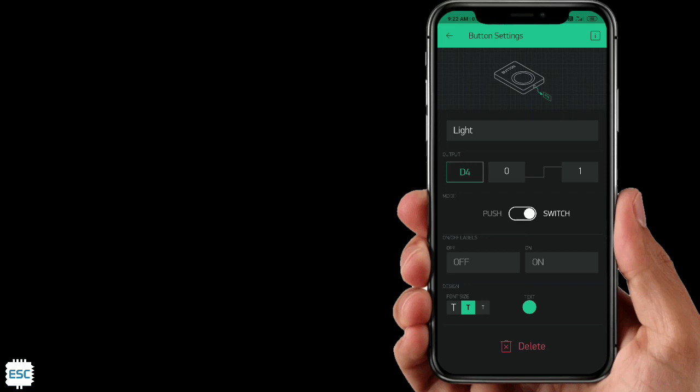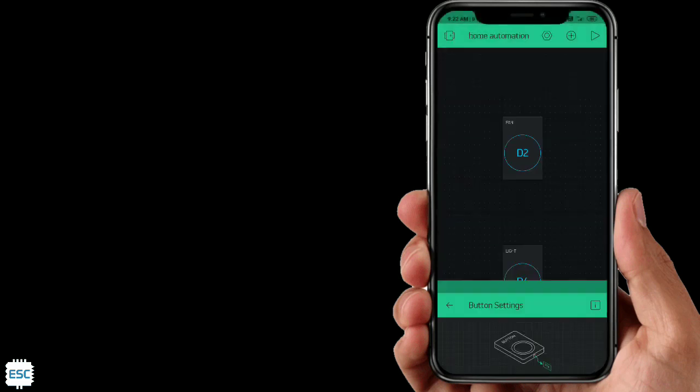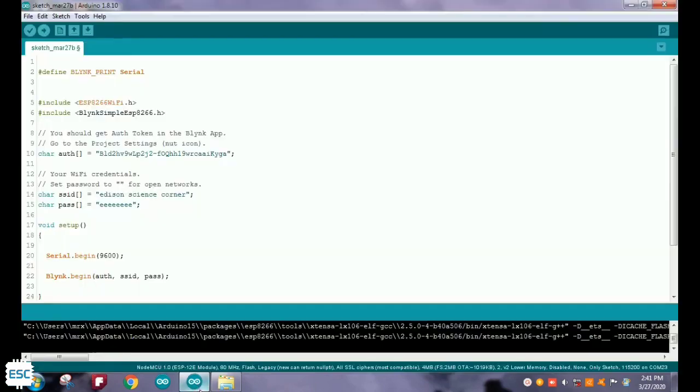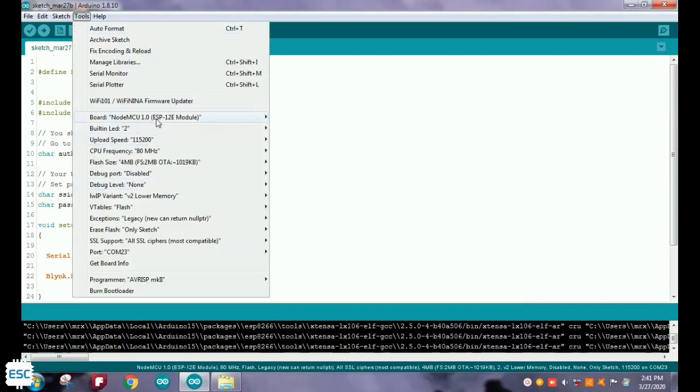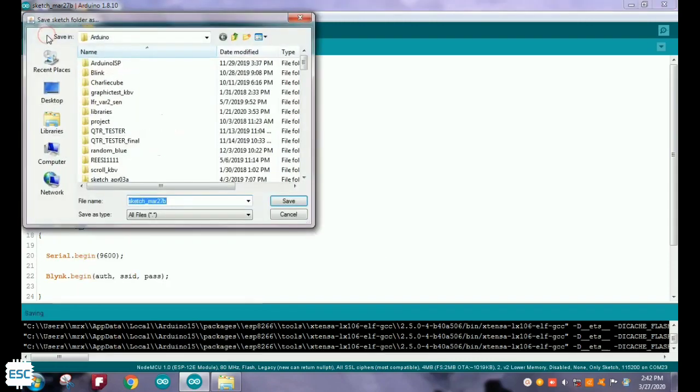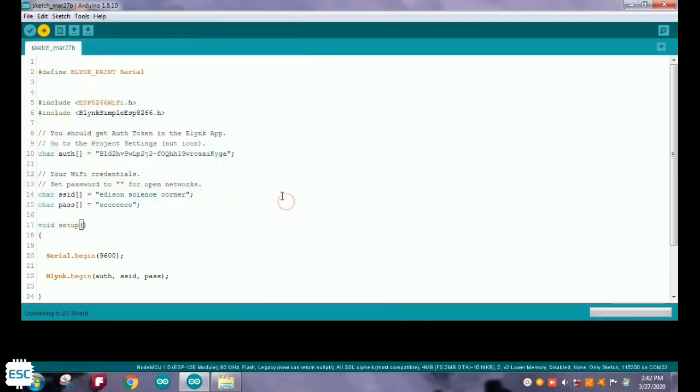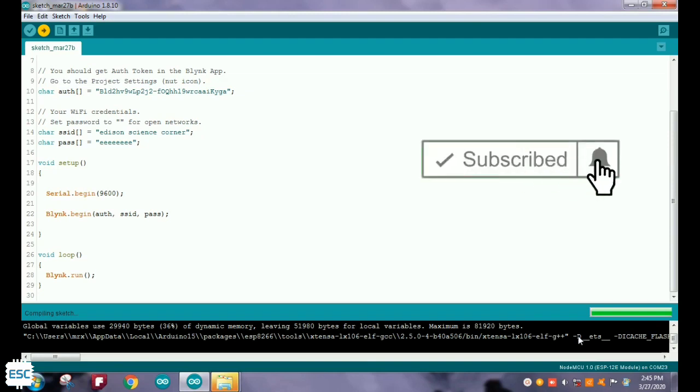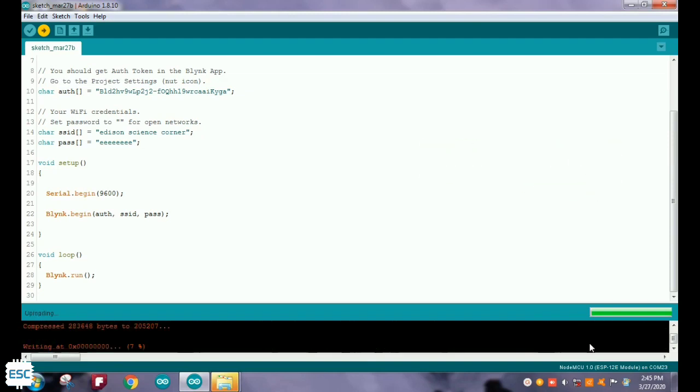Now let's set up our code. Open Arduino IDE and open this sketch on Arduino IDE. You can download this sketch from my blog, link is in the description. Please watch my previous video to know more about how to set up ESP8266 board on Arduino IDE. You can see the code is uploading, it takes time, wait patiently. Now the code is uploaded.